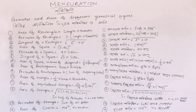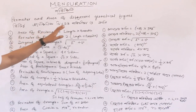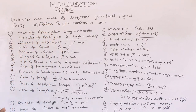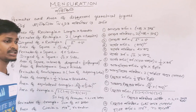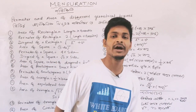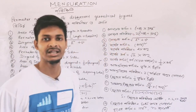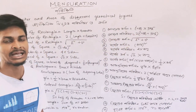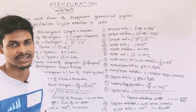So, the first formula is called Perimeter and Area of Different Geometrical Figures. The first is the Area of Rectangle. We know the rectangle, which in Bangla is called Ayatoketra. The formula is length into breadth.